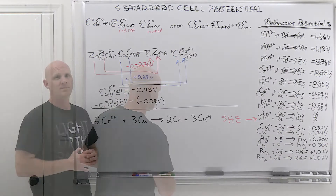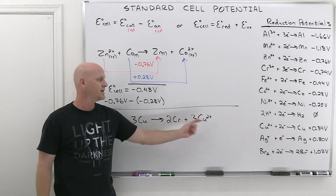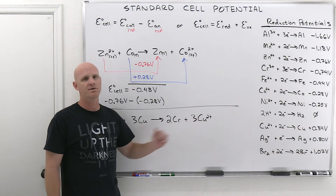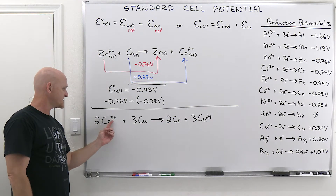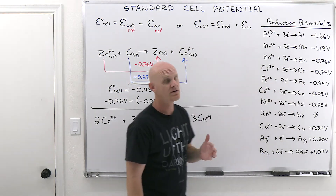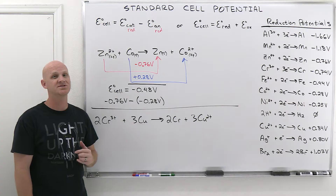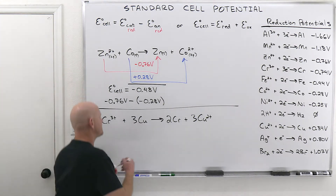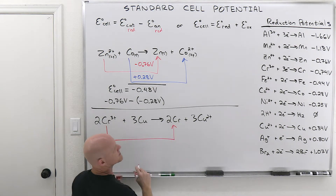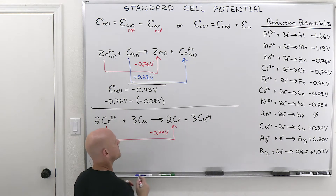Example 2: 2Cr³⁺ + 3Cu → 2Cr + 3Cu²⁺. I chose this example specifically because of the coefficients. Looking at Cr³⁺ → Cr: Cr³⁺ is the reactant and Cr is the product, matching the reduction direction, so that's the cathode. But we're doing 2Cr³⁺ → 2Cr — do we double the voltage? No. We just use the value from the table as-is: −0.74 volts.